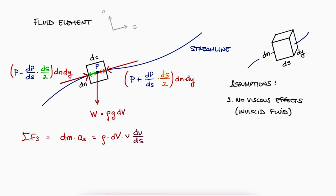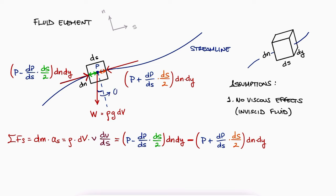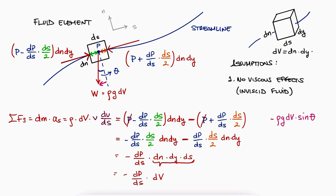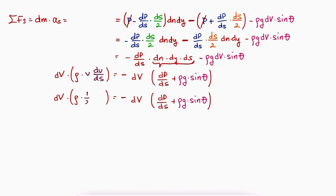For the sum of forces themselves, we have the force caused by pressure acting on the left face going to the right, the one on the right going to the left, and the component of weight rho g dV times sine of theta. We rearrange the first two terms to see that they are minus dp/ds times the volume element, and therefore the dV term can be factored out from both sides. On the left-hand side, we see that v times dv/ds is the same as one half of the derivative of v squared with respect to ds — by the chain rule.